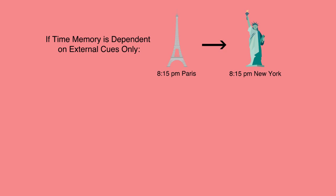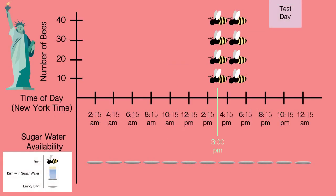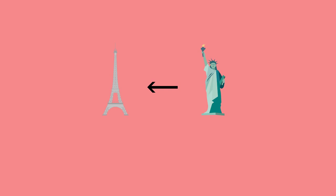However, if the bees' time memory ability is managed by an internal clock, then the bees would be expected to appear for feeding at the new test site 24 hours after they last appeared for feeding at the old test site — in other words, 8:15 to 10:15 p.m. French time, regardless of local time in New York. When tested in New York, the bees came to the feeding place at 3 p.m. New York time, which is 24 hours after the last feeding in Paris. No bees appeared at 8:15 to 10:15 p.m. New York time. To double-check his results, Renner then trained the bees on a new feeding schedule in New York, and then flew them back to Paris. Again, the bees appeared 24 hours after their last feeding time, showing that they kept time using an internal clock. This experiment confirmed that the time sense of bees is able to function independently of daily external factors.